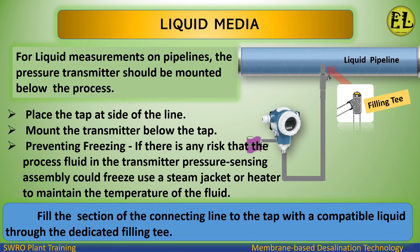Liquid Media: For liquid measurements on pipelines, the pressure transmitter should be mounted below the process. Place the tap at the side of the line and mount the transmitter below the tap. If there is any risk that the process fluid in the transmitter pressure sensing assembly could freeze, use a steam jacket or heater to maintain the temperature of the fluid. Fill the section of the connecting line to the tap with a compatible liquid through the dedicated filling tee.